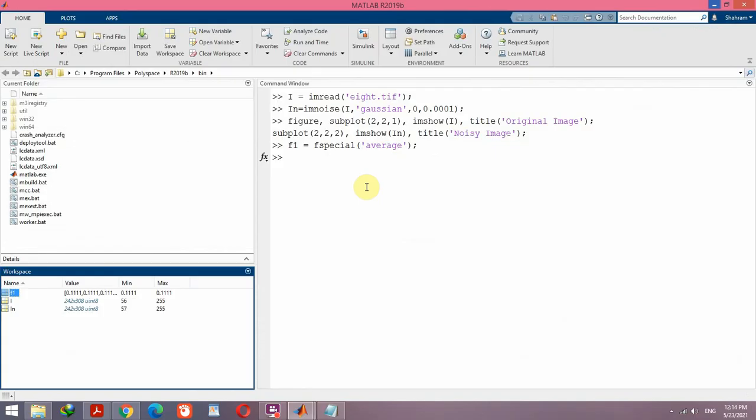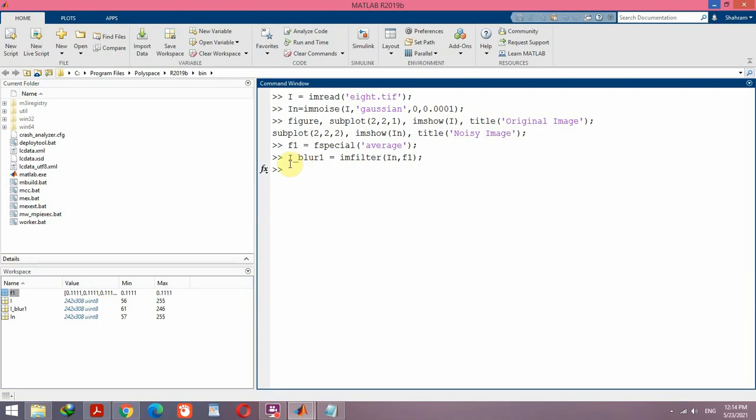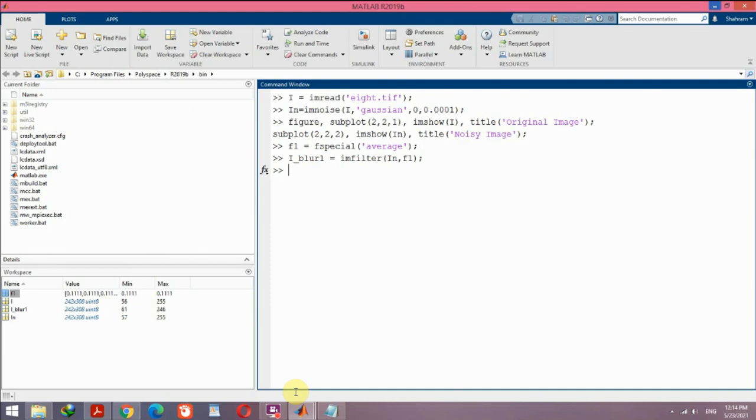Now by using imfilter I will apply the filter over the noisy image. I save the result in I_blur_1. Of course after applying a low pass filter the result image will be blurred. Let me display this image.